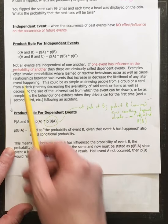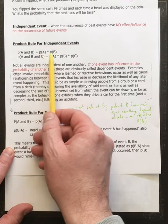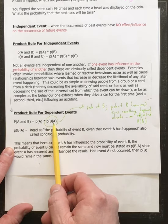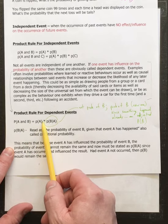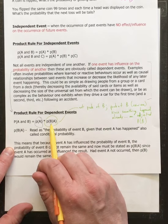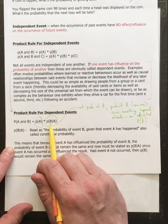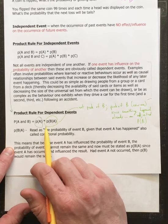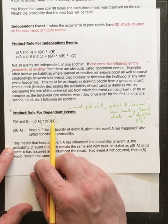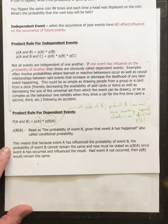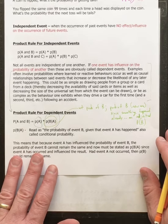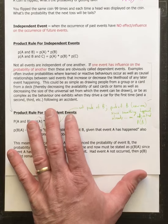The product rule is the same for independent events: P(A) times P(B). But the product rule for dependent events is different. The probability of A and B happening is P(A) times P(B|A) — not just P(B). P(B|A) means the probability of B happening given that A has already occurred. B's probability is now a new, adjusted probability — A has influenced the probability of B.